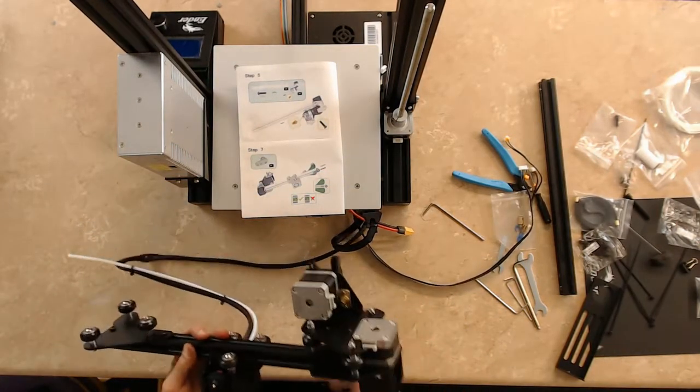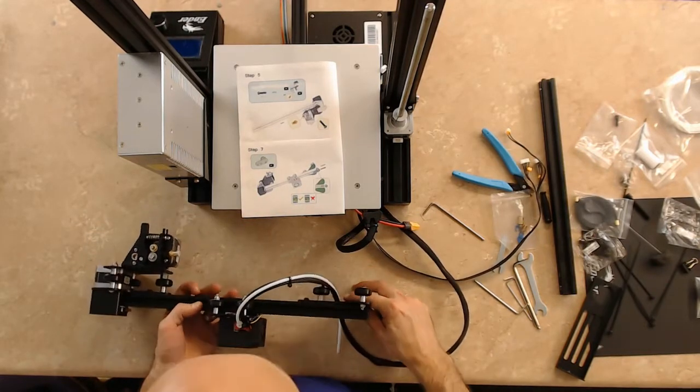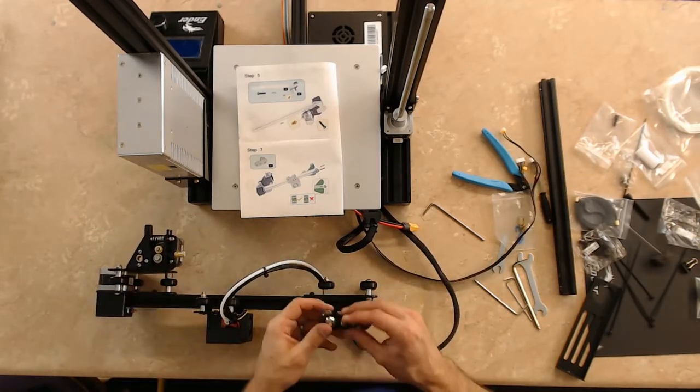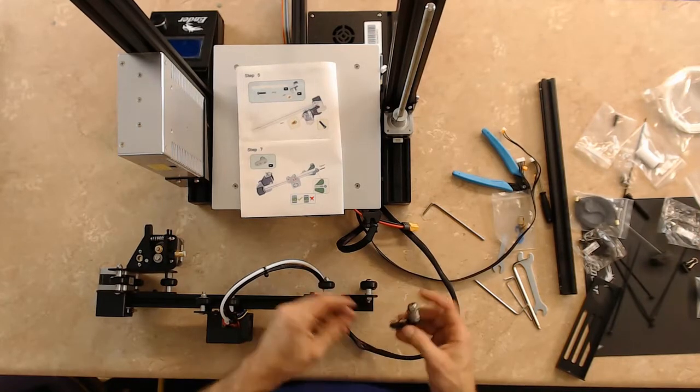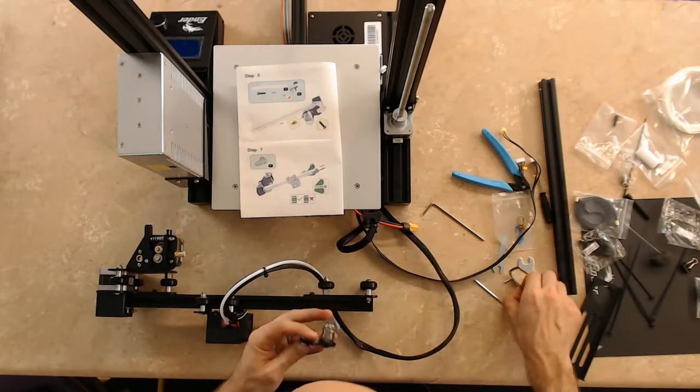Okay, so they're saying now flip this thing this way with the extruder pointing up. So the nozzle of the extruder is actually pointing down. And so this is going to slide into the aluminum extrusions.